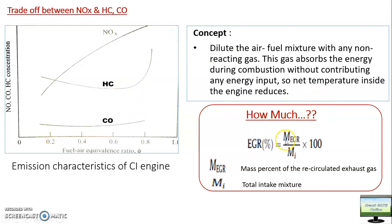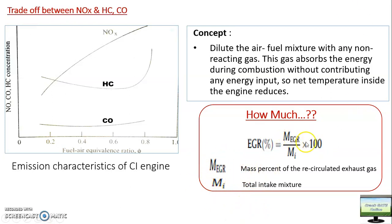The EGR percentage can be calculated as: EGR% = m_EGR / m_total_intake × 100, where m_EGR is the mass of recirculated exhaust gas and m_total_intake is the total intake mixture mass. For example, if 100 grams is the total intake going inside the engine and 10 grams of EGR is mixed, then the EGR percentage is 10%.